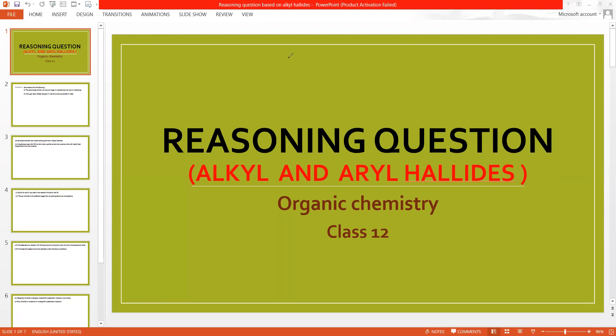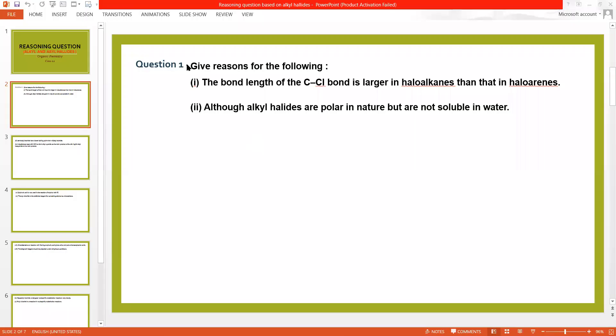Now I am discussing the first reasoning related to alkyl halide. The very first reason is that the bond length of carbon-chlorine bond is larger in haloalkanes than that in haloarenes. Haloalkanes are those in which alkyl group and halogen are directly bonded to each other, for example chloroethane.